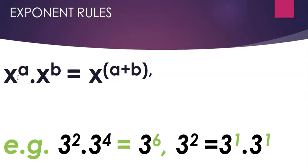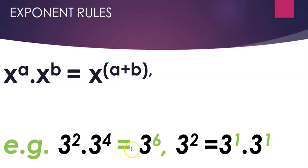The next rule is: when you have two terms with the same base — for example, x raised to the power a multiplied by x raised to the power b, where both bases are x — then you add the exponents to obtain the final answer. So x raised to the power a times x raised to the power b equals x raised to the power a plus b.